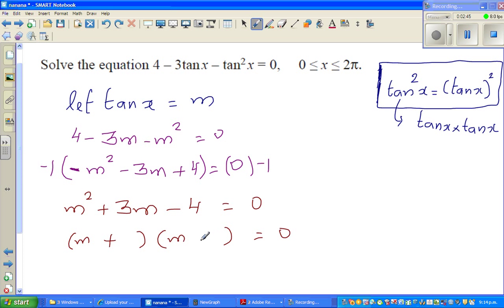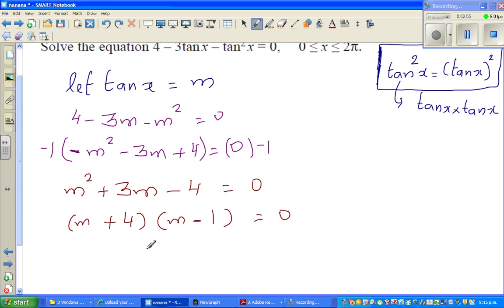Now, the greater number has to come here because you want a plus here. So it's plus 4 minus 1, so simple. So now this becomes m, if you set this equal to 0, you can understand that m is negative 4 or m is 1.